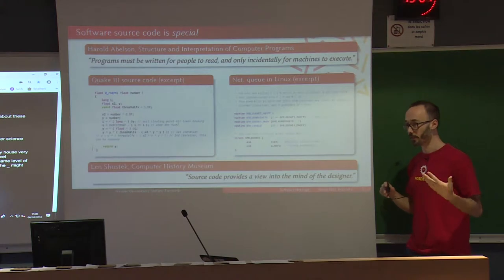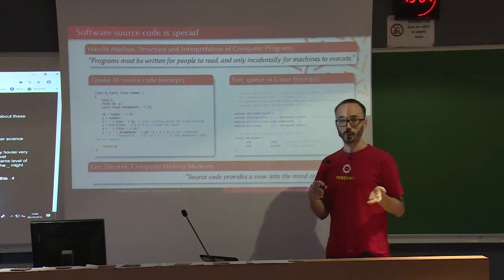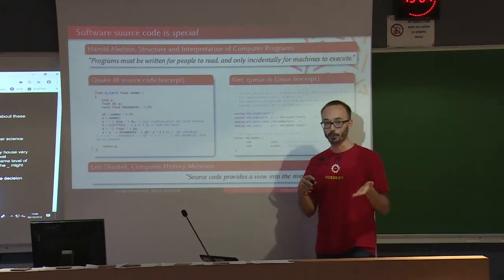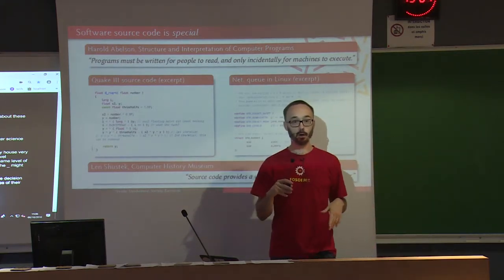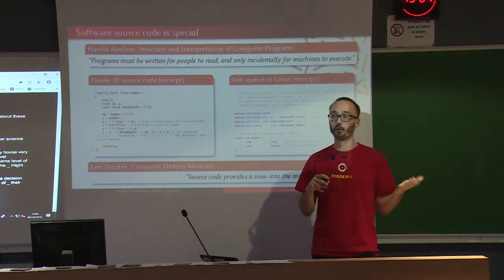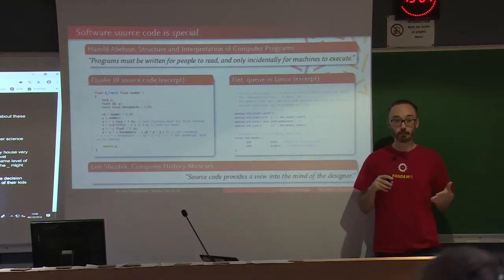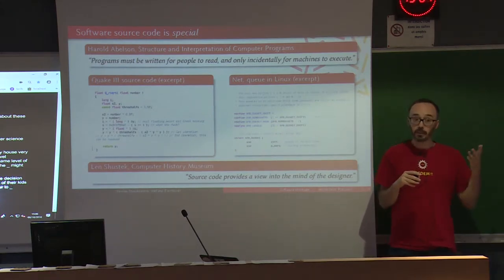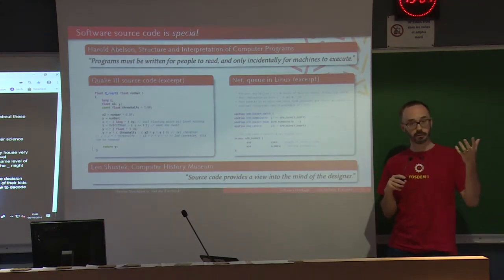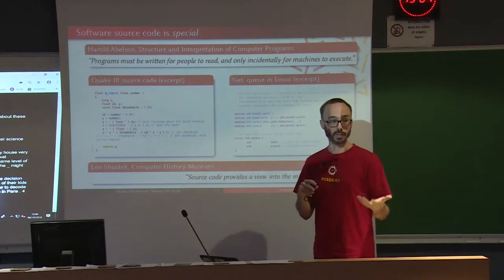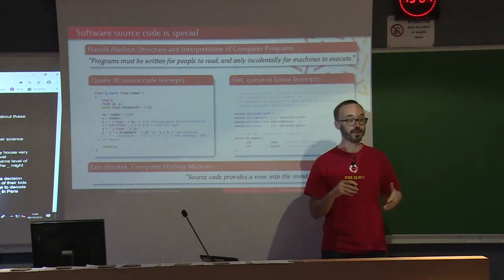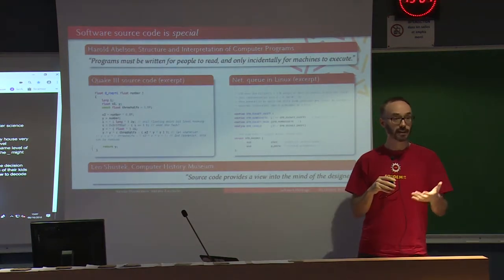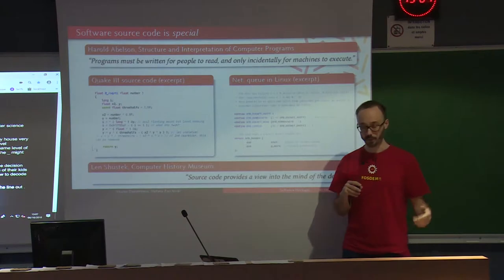Another example: maybe we will be the first generation with no pictures of our kids 50 years from now, because we're storing pictures in formats that are proprietary and we won't know how to decode them. But if you have a piece of code that is able to decode, parse, and render those images, even without a specification, there is value — there is knowledge in there that can tell someone down the line how to read those images.